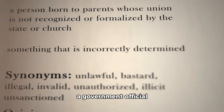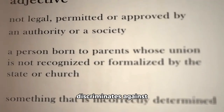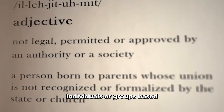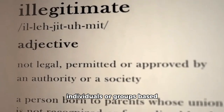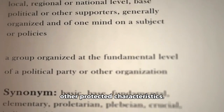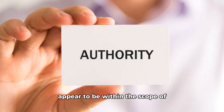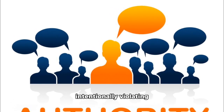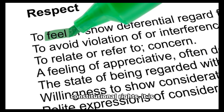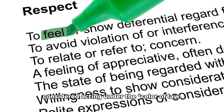Another example is when a government official discriminates against individuals or groups based on their race, religion, or other protected characteristics. Even if the official's actions appear to be within the scope of their authority, if they are intentionally violating constitutional rights, it is considered acting under the color of law.